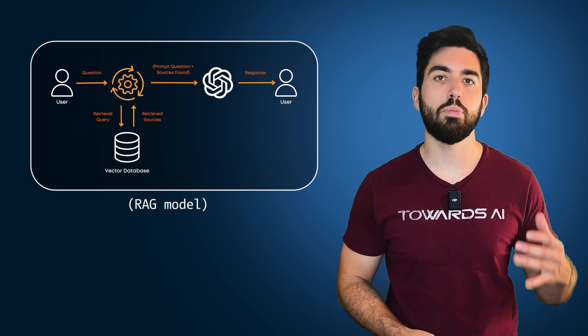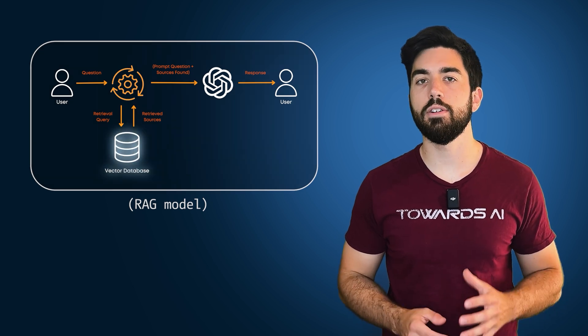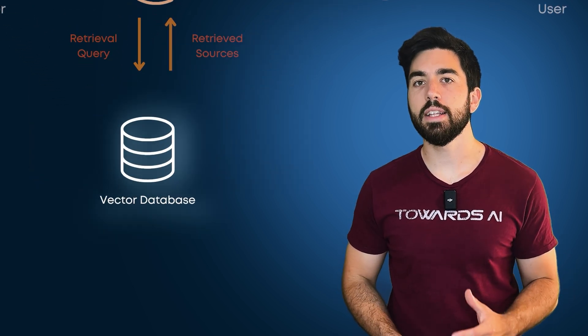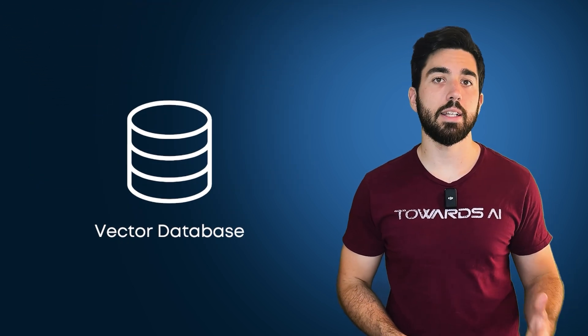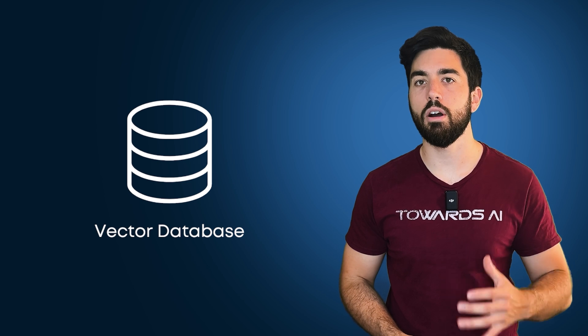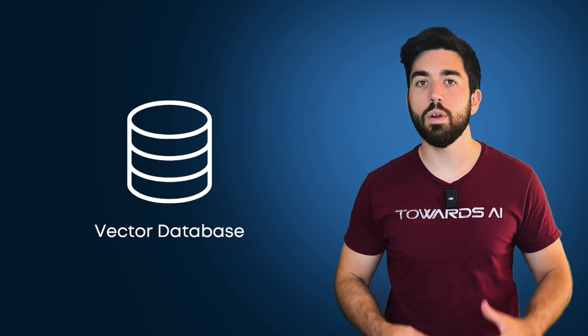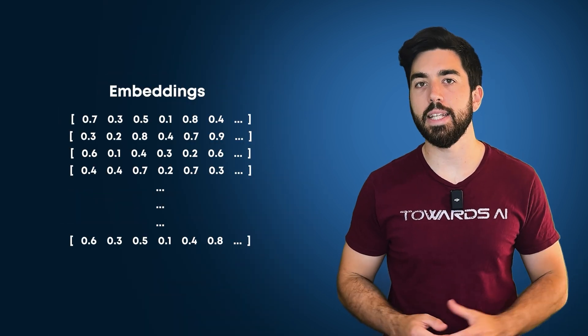Instead of just finding precise matches, we use a vector database. Our vector database is basically all the data that we've fed into our LLM to retrieve its own understanding of it, which are our embeddings.